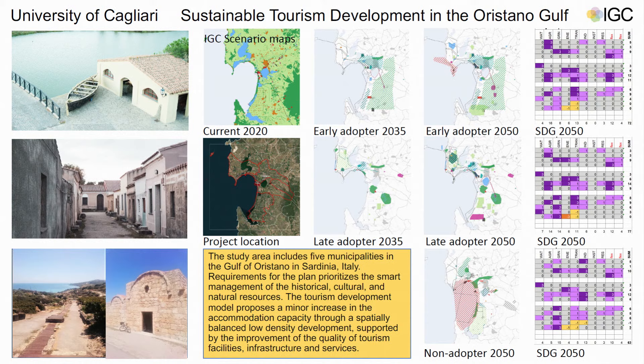They wanted to understand how to spend the money now but also how to develop sustainable tourism in the future. We ran three workshops — one longer one with the municipality and real stakeholders to address their urgent need, and then two workshops with my students in civil engineering and architecture. The design we developed for the non-adopter scenario is grounded on the current need of the five municipalities around the Gulf of Oristano.